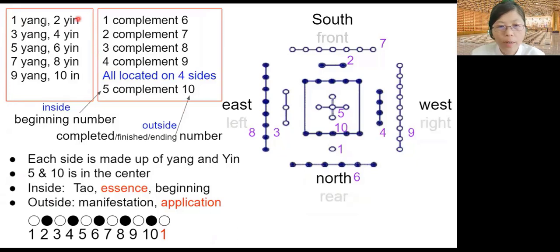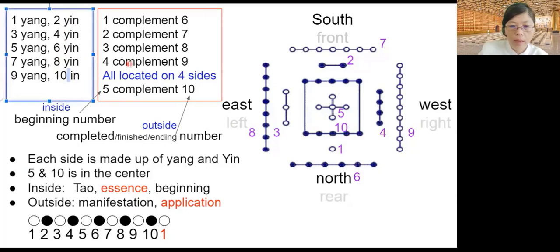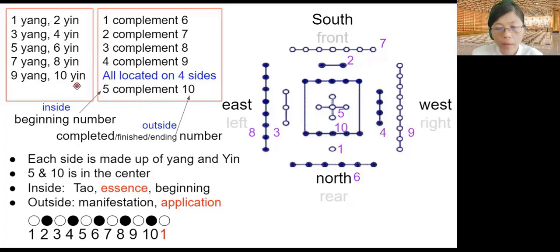To make the picture easier to understand, all the numbers are shown here. One, three, five, seven, nine — all the yang numbers, all the odd numbers. Two, four, six, eight, ten — all the yin numbers, represented by the black dots.